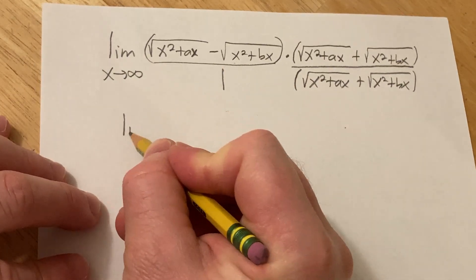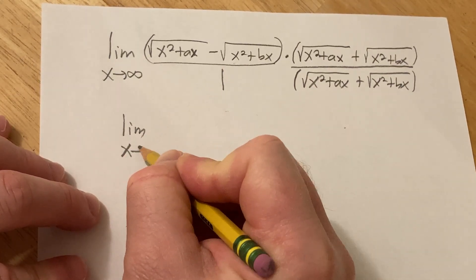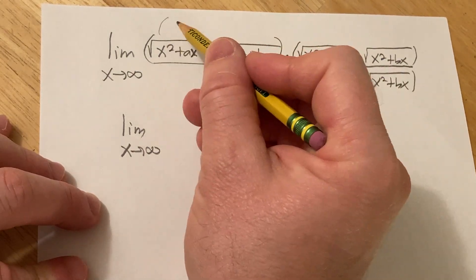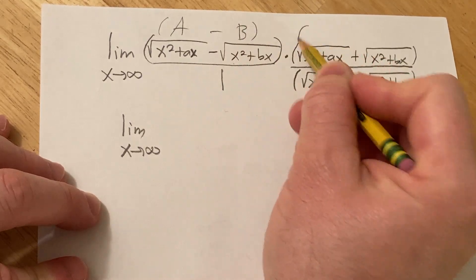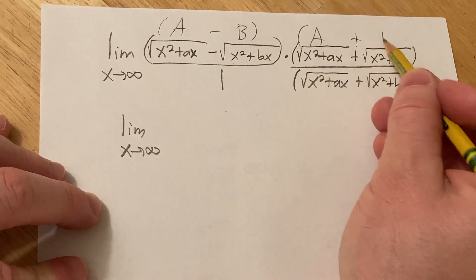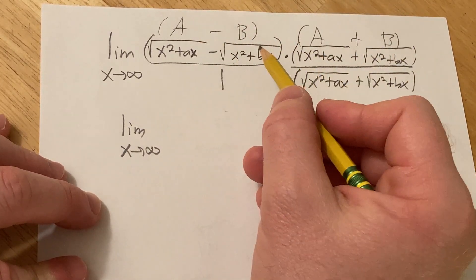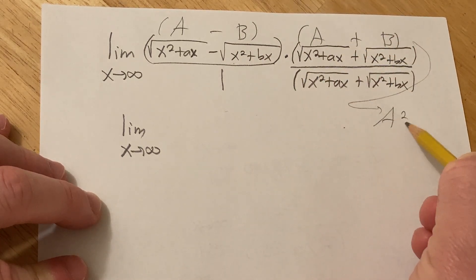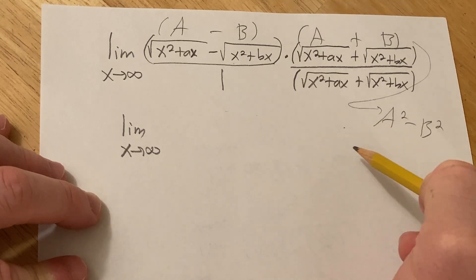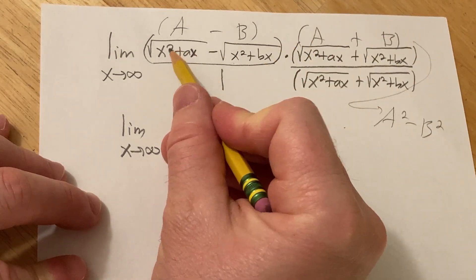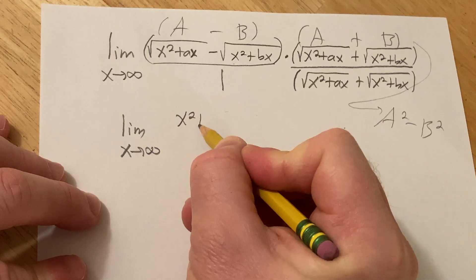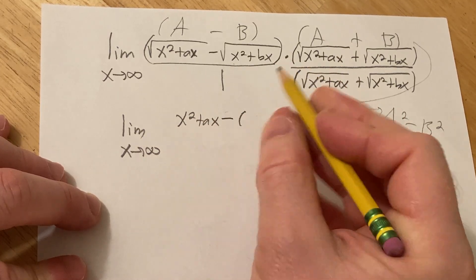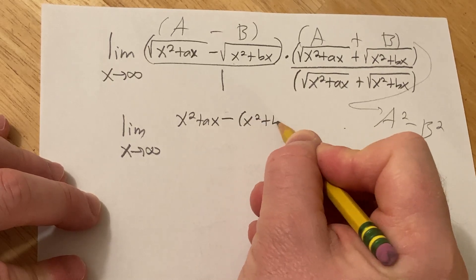This is the difference of squares formula: if you have A minus B times A plus B, that equals A squared minus B squared. So the numerator becomes x squared plus ax, minus parenthesis x squared plus bx.